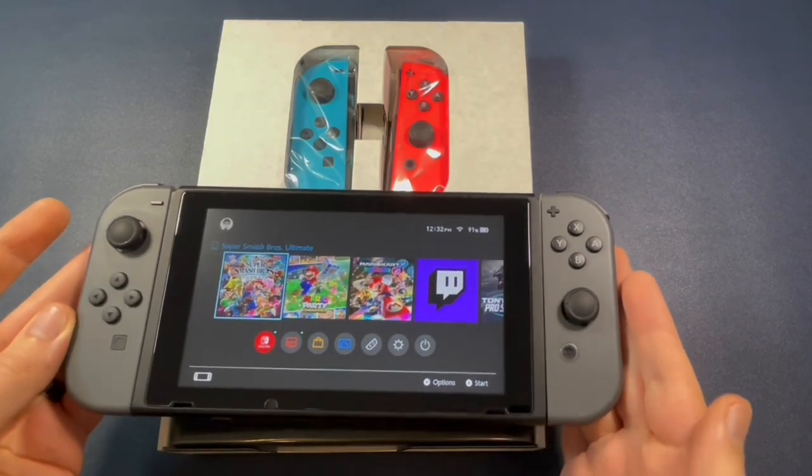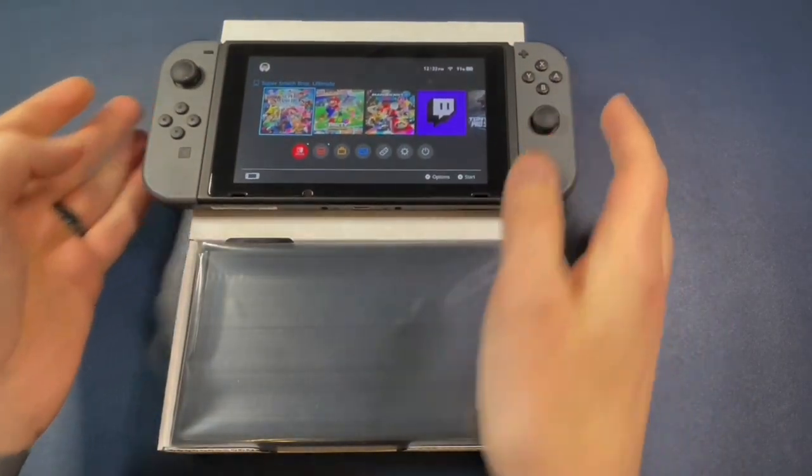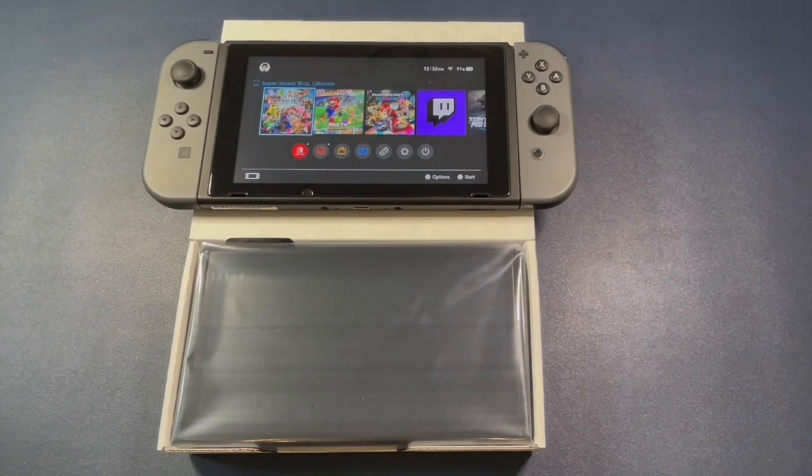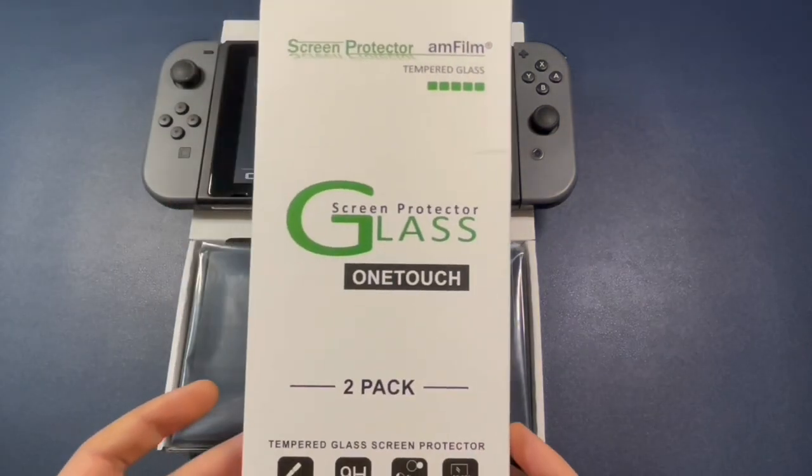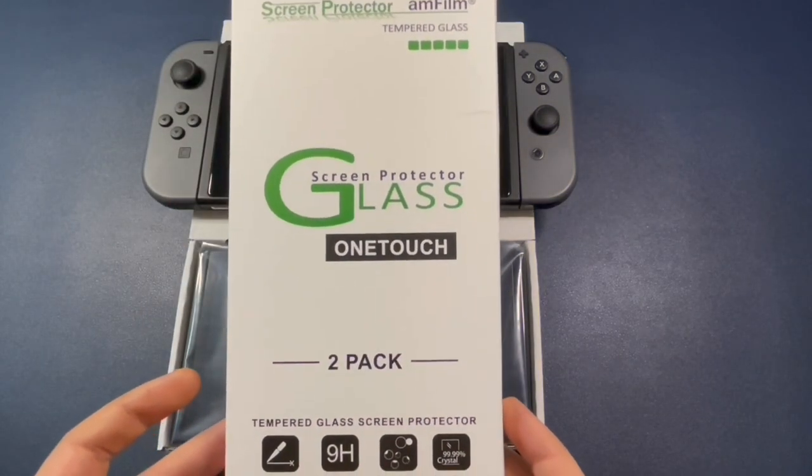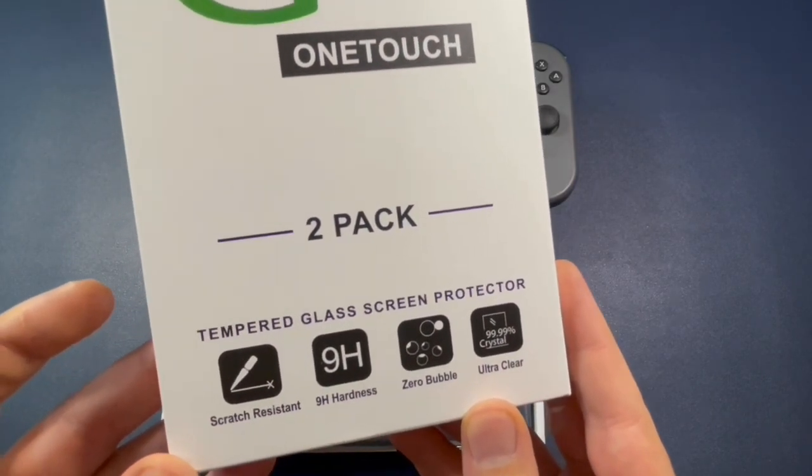This is the Nintendo Switch version 2, but underneath it a brand new Nintendo Switch OLED. We're going to take it out of the box and immediately put on the best screen protector that you can get. And that is this one right here. Tempered glass.